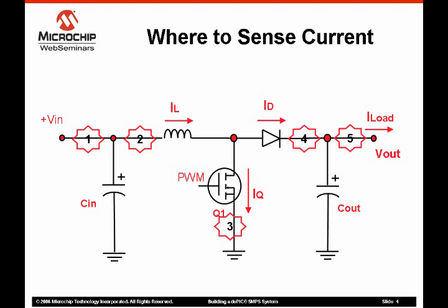At location 4, peak inductor current can be sensed, but like node 2, a high common mode voltage exists, which can complicate the current sense circuitry. At location 5, the load current is measured. Because the capacitor also supplies current to the load, this node is not a useful point to measure current for traditional current mode control applications. However, this location is a good point to measure current for load sharing, and it is also a great place to monitor load current transients for modern digital power converter control systems. Classical control systems are limited in their response time by the inductor and output capacitor, while the DSPIC SMPS can immediately detect load transients at the output.